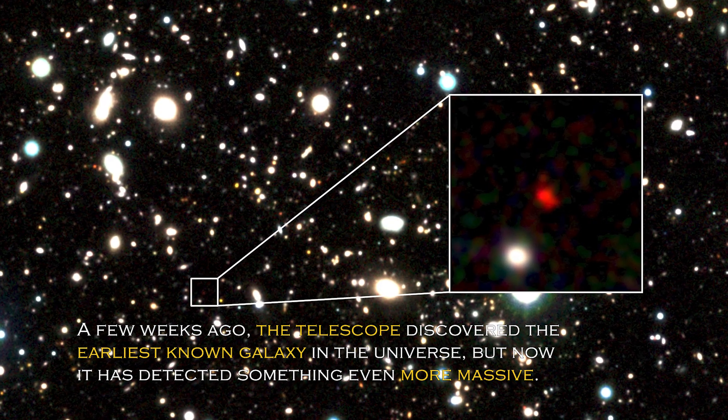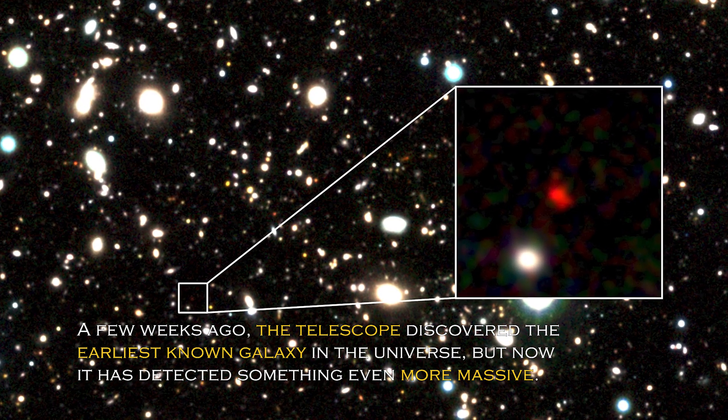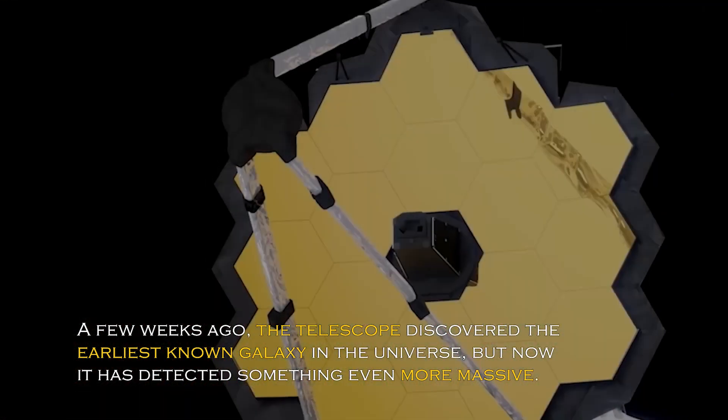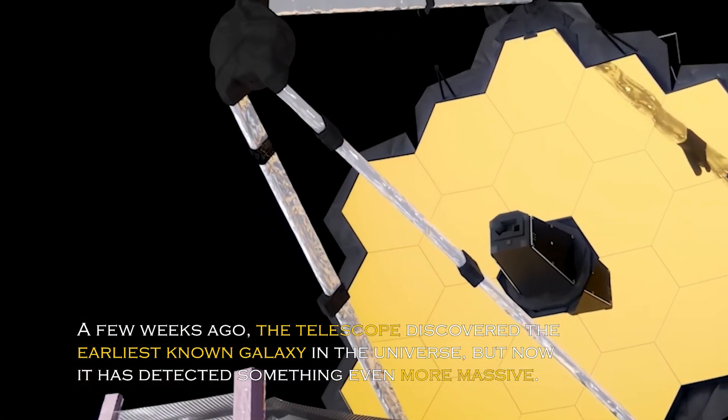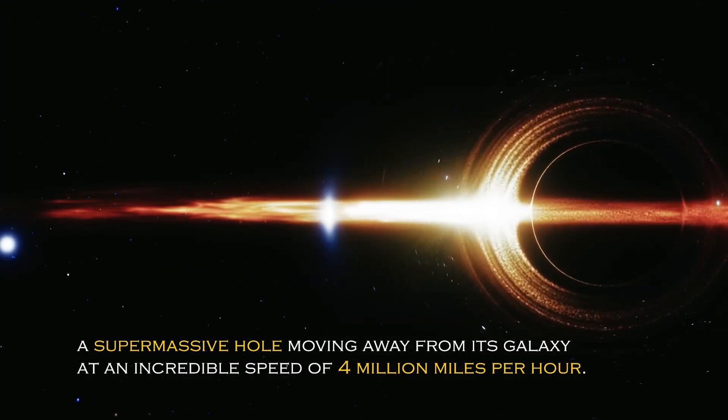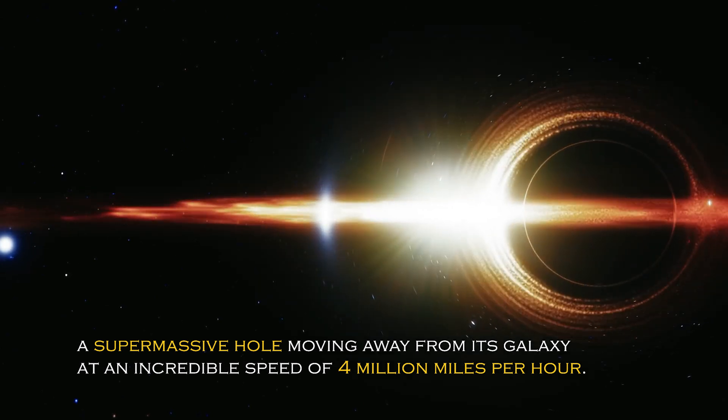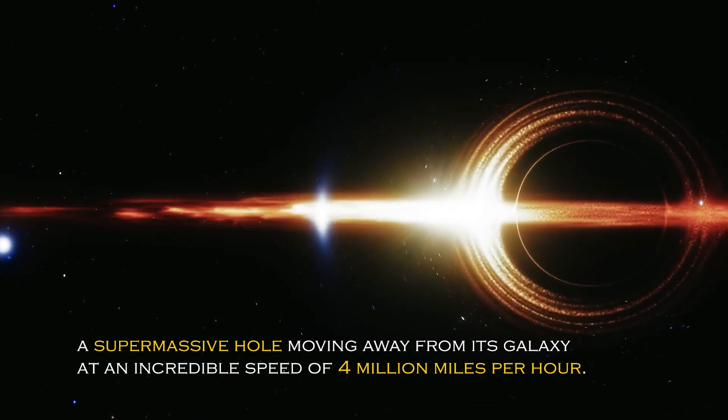A few weeks ago, the telescope discovered the earliest known galaxy in the universe, but now it has detected something even more massive – a supermassive hole moving away from its galaxy at an incredible speed of 4 million miles per hour.